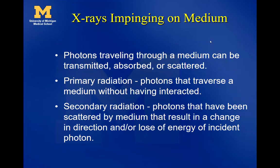Hi everybody. In this lecture we're going to continue where we left off. We talked a lot about x-ray interactions, all the different kinds, labels, and things like that. What we're going to get to in this lecture is what happens when x-rays are impinging on a medium — like a layer of lead, one of our patients, or the air in the room.